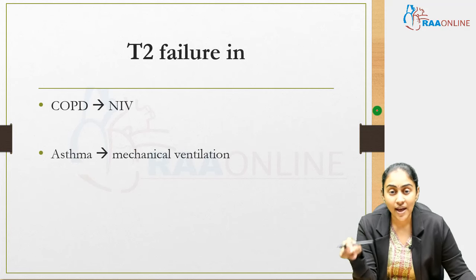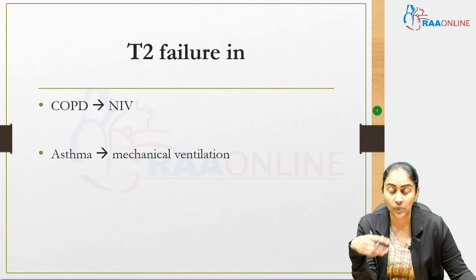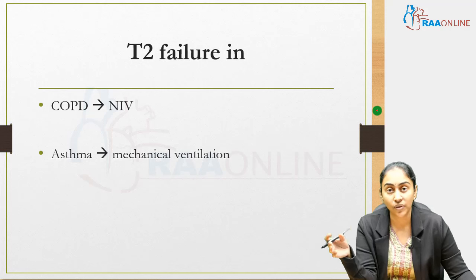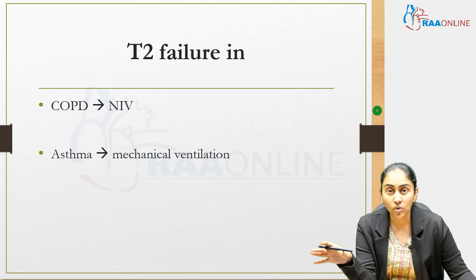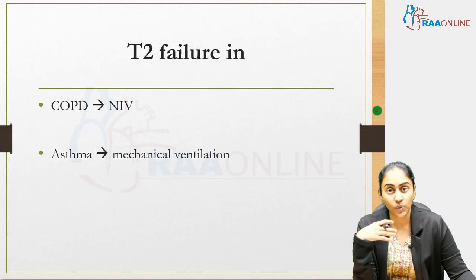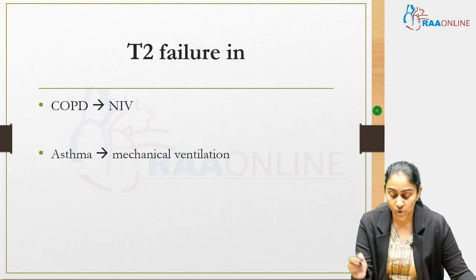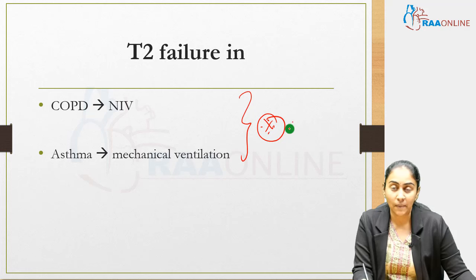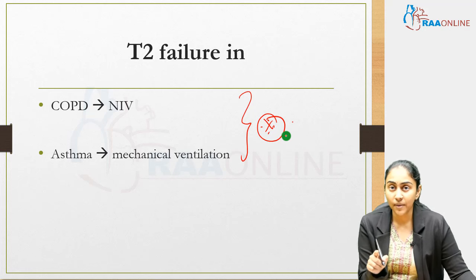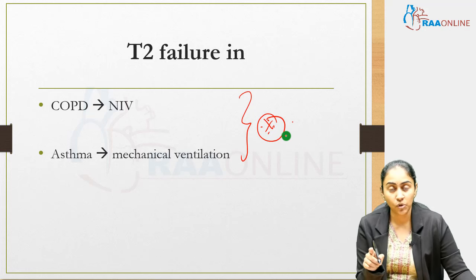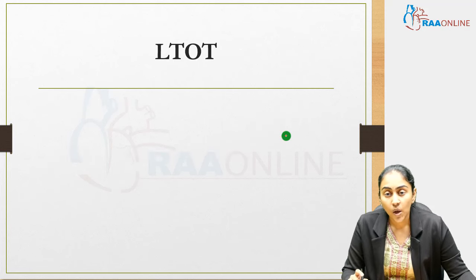Whereas in an asthma patient in worsening type 2 failure not responding to medical management, there is no role for NIV — you directly have to intubate and put the patient on mechanical ventilation. This is very important to remember: COPD type 2 failure goes to NIV; asthma type 2 failure goes to intubation.